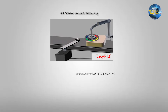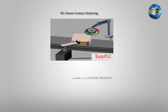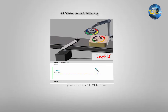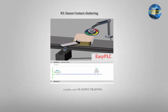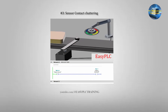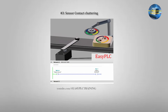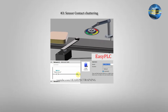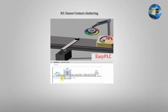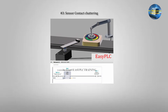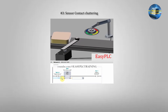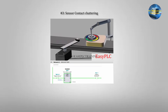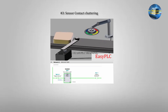Example 3: Sensor Contact Chattering. Assume we have a limit switch used to detect the presence of an incoming object. When the object makes contact with the switch, the contact does not close clearly — it produces a chattering or bouncing signal before settling. This results in multiple rapid on-off transitions which can cause false multiple detections. To prevent this, a debounce timer typically set to around 200 milliseconds is used, filtering out the unstable signal and ensuring only one clean, stable detection is generated.